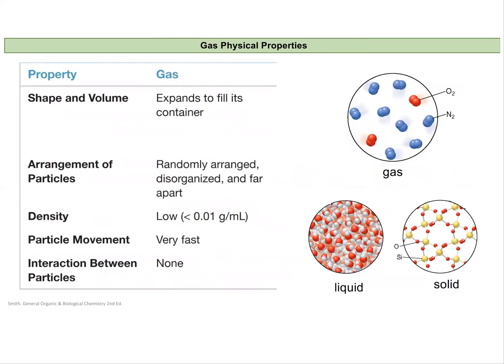So here are some of the physical properties of a gas, especially that come out of kinetic molecular theory. One, it is going to expand to fill its container. So a gas will take on the shape and volume of whatever you put it in. And these particles are moving fast and randomly, and so they can just fill up that whole space. They're randomly arranged, disorganized, and far apart is how we think of their arrangement of particles. This strongly contrasts solids where we have a very fixed arrangement of molecules relative to one another.